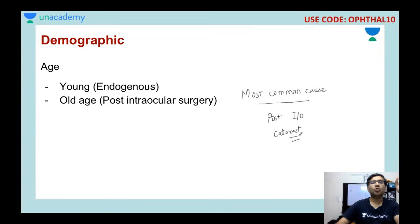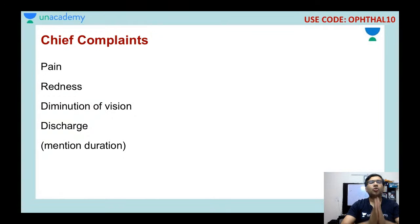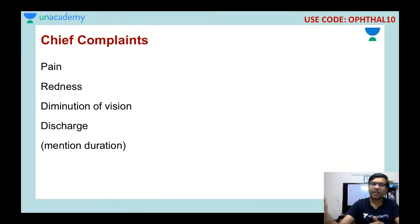The chief complaints in endophthalmitis are the same as in uveitis: pain, redness, discharge, diminution of vision, and halos. Always mention the duration and list them in decreasing order. For example: severe pain for 5 days, redness for 4 days, diminution of vision for 3 days, and discharge for the last 3 days. In this way you tell the examiner the most important complaint first and then proceed to the others.